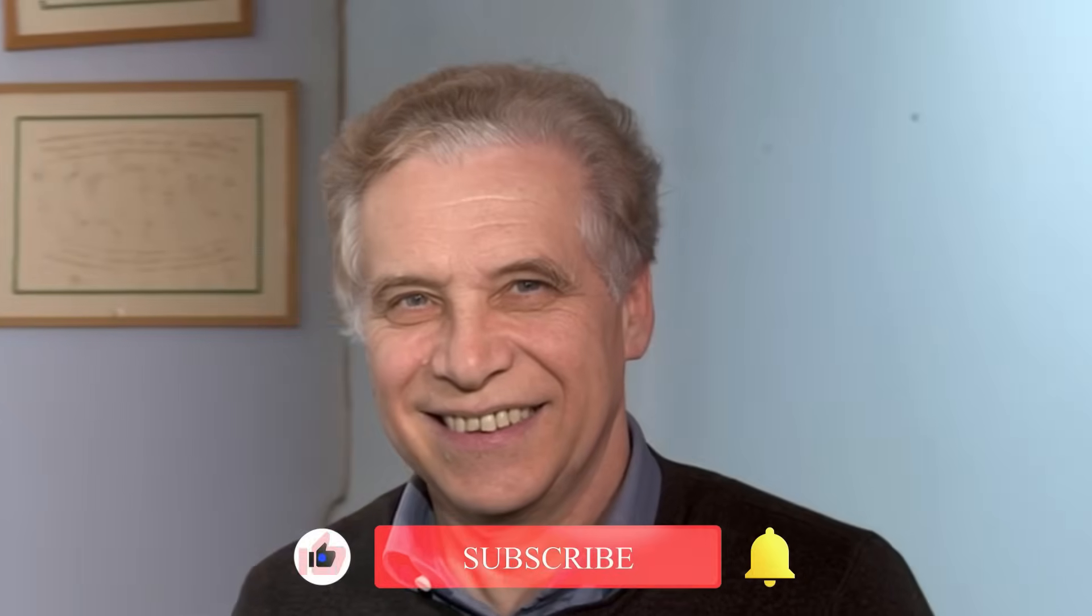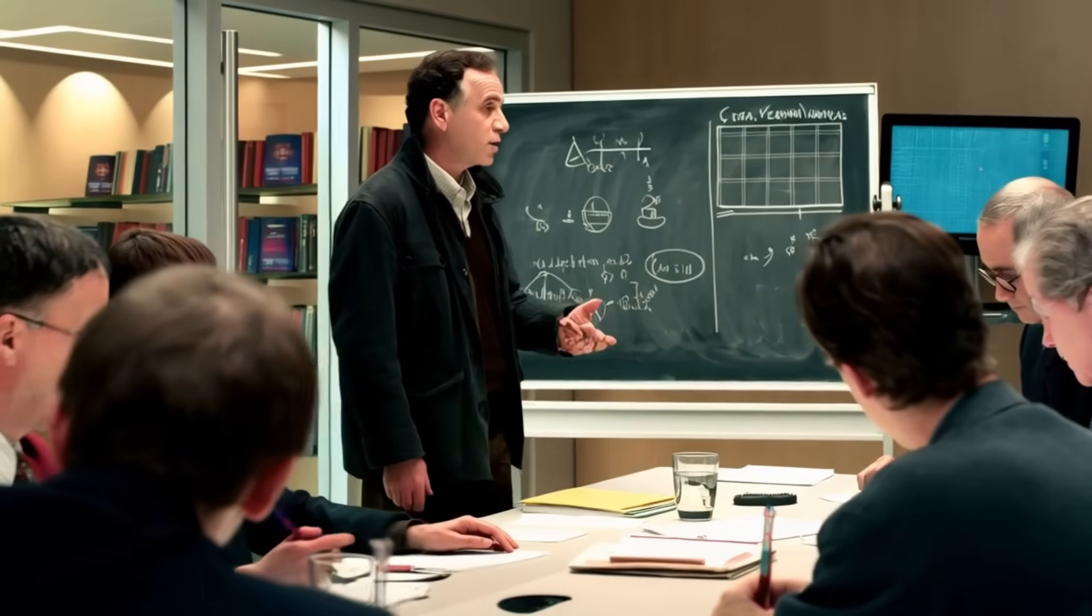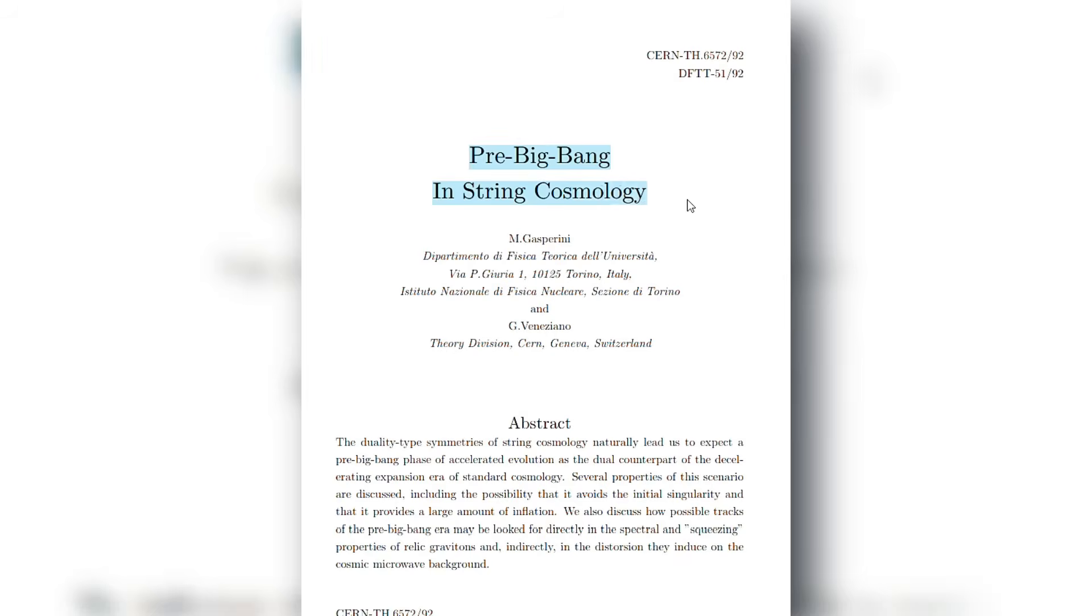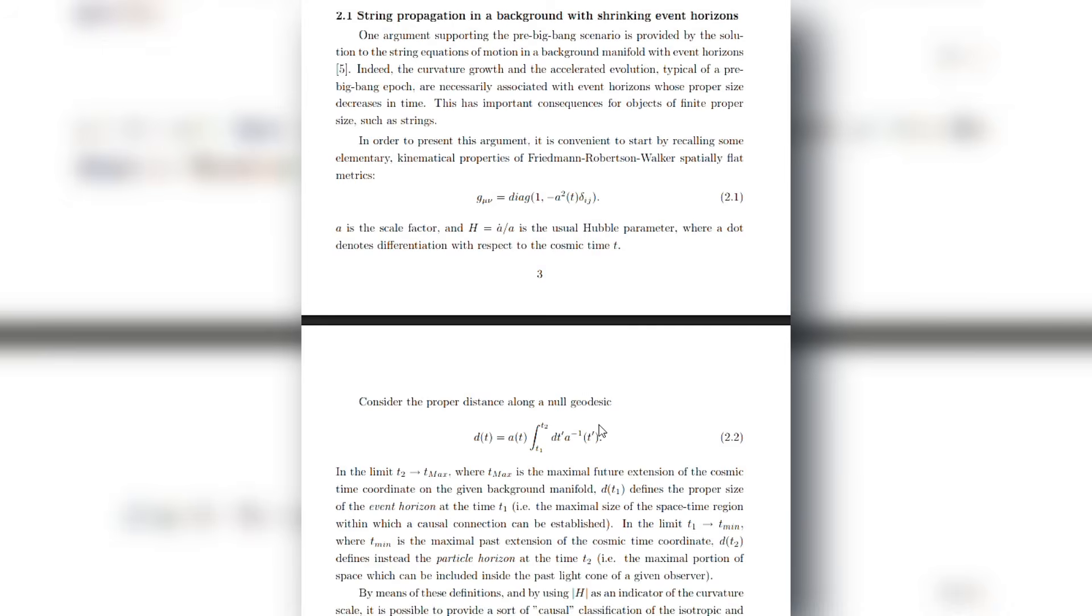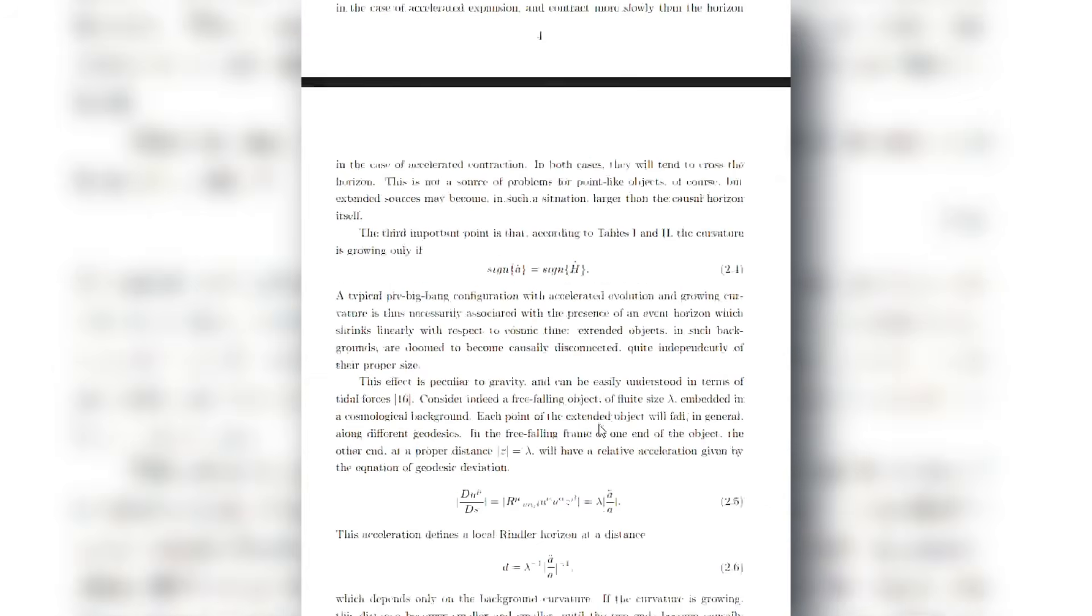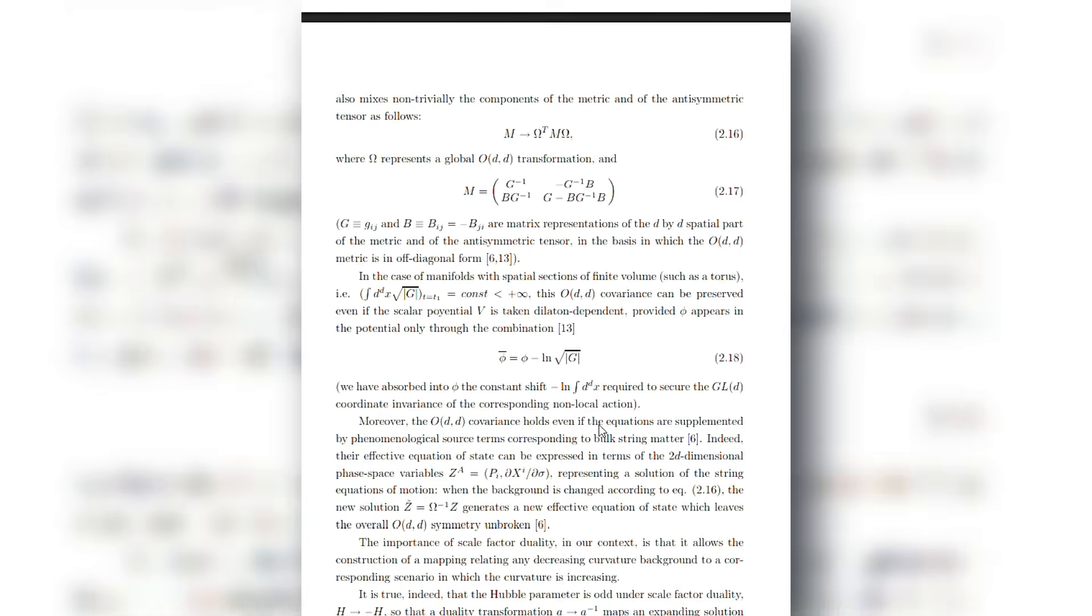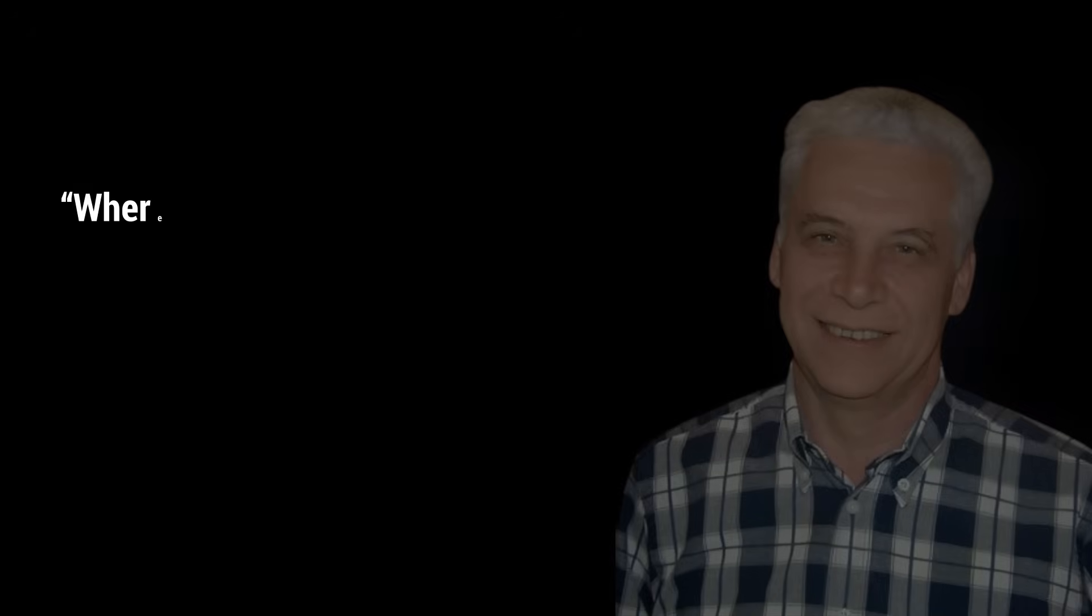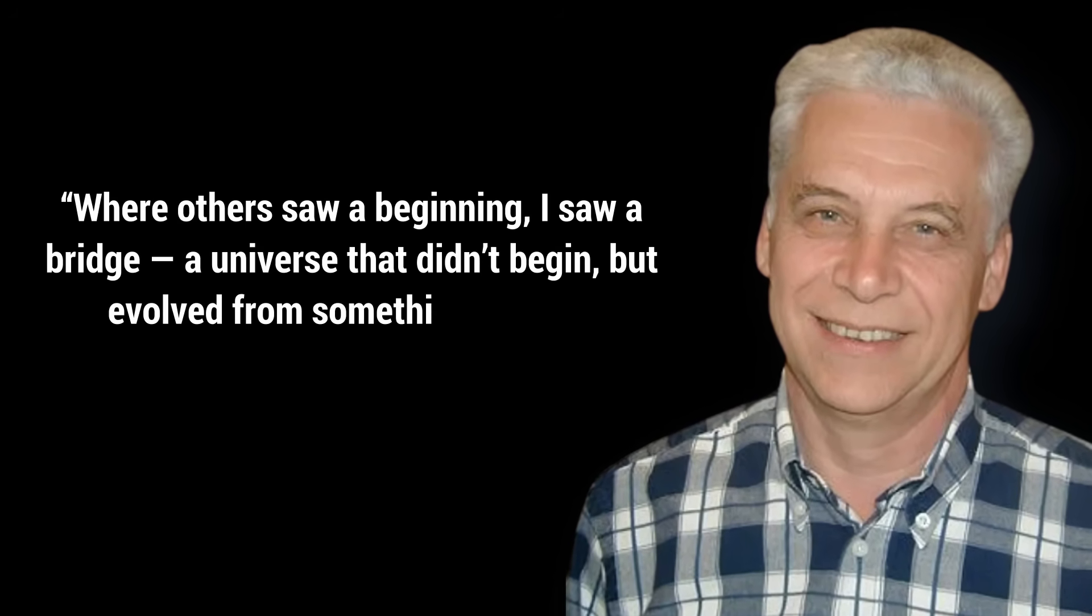By the 1990s, Veneziano had become one of the most respected theorists in the world. As director of the CERN theory division, he guided research through one of the most creative eras in modern physics. But his curiosity never stopped evolving. In 1991, he published a paper that would once again stretch the boundaries of imagination, proposing that the universe existed before the Big Bang. According to Veneziano's model, the Big Bang wasn't a beginning. It was a transition. The universe, he suggested, could have emerged from an earlier contracting phase. A bridge from one era to the next. Where others saw a beginning, he once said, I saw a bridge. A universe that didn't begin, but evolved from something deeper.